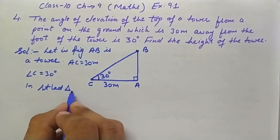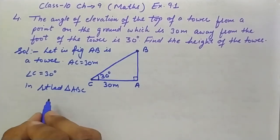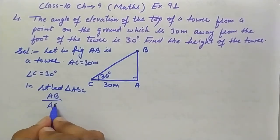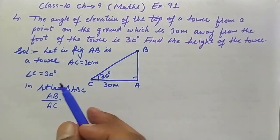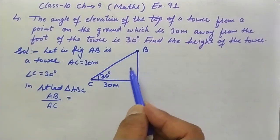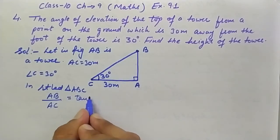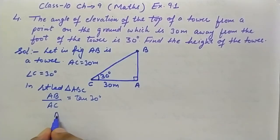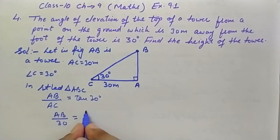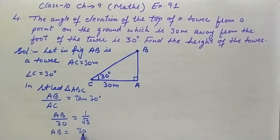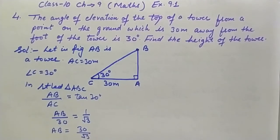In right-angle triangle ABC, we need to find AB. Writing AB over AC gives us the ratio of perpendicular over base, which equals tan 30 degrees. So AB over 30 equals tan 30, which is 1 over root 3. Cross multiplying, AB equals 30 over root 3.